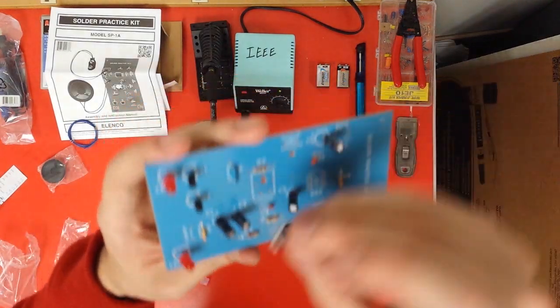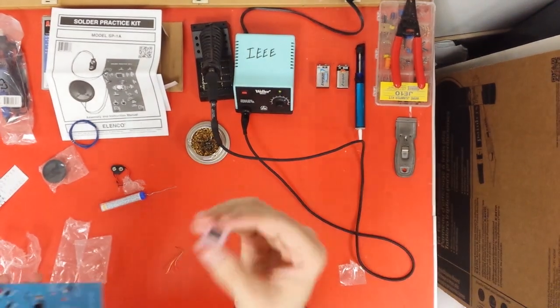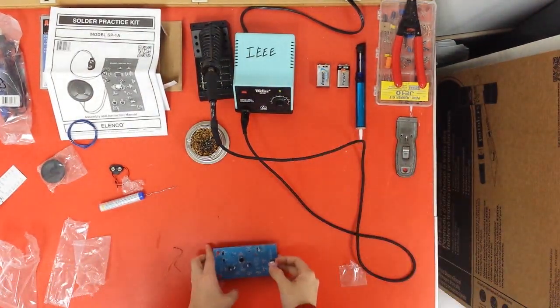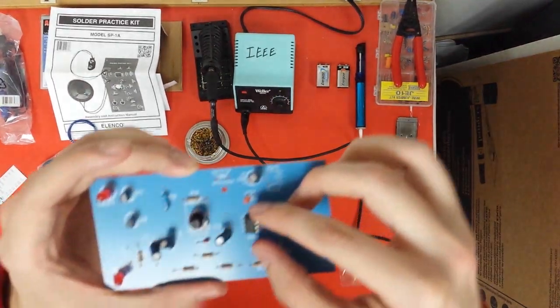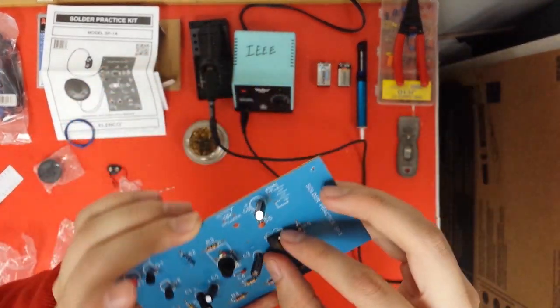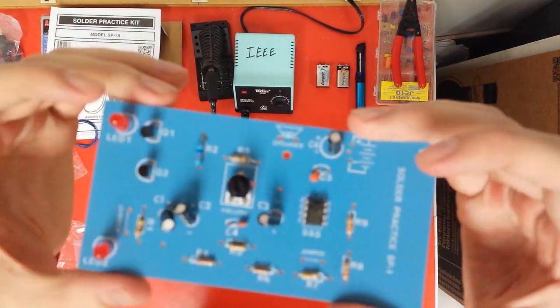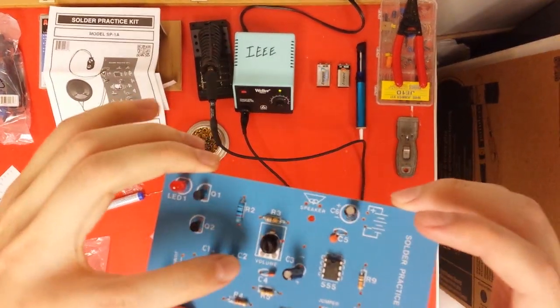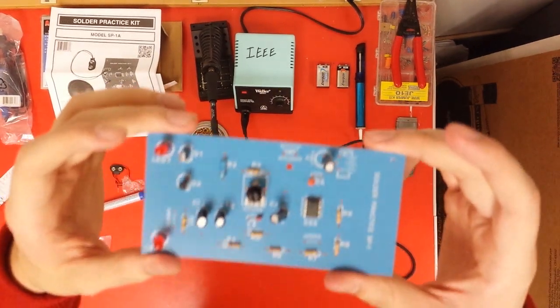And the last things to put in are the potentiometer, which is going to adjust the volume, and your IC, which is on this little pink thing. The IC has a little notch on it. You want to make sure that the notch matches the picture. Make sure that your ICs and all of your components are oriented correctly. And once you've made sure, you can go ahead and start soldering.